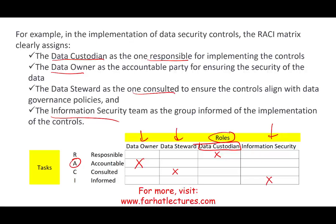You should always have an A — someone accountable — and at least one group marked as R — doing the work. You don't want to have too many Cs everywhere, because if everybody is a C, you're going to go back and forth with so many discussions. There should always be a group that you're going to inform as well.